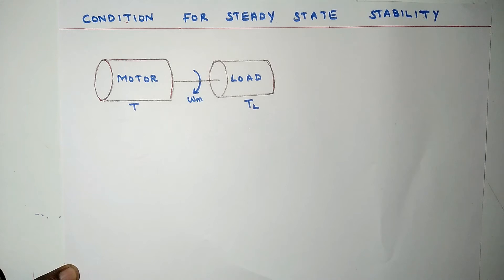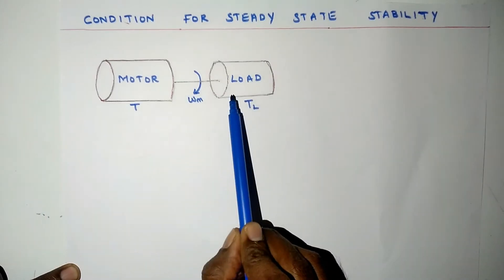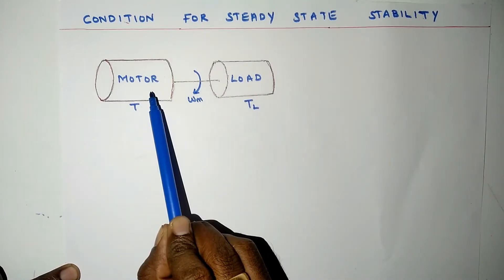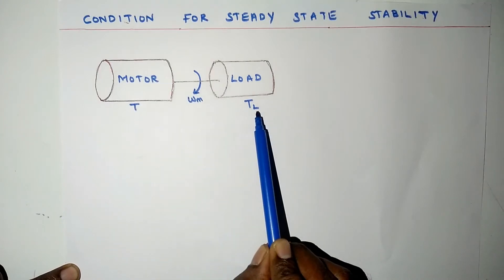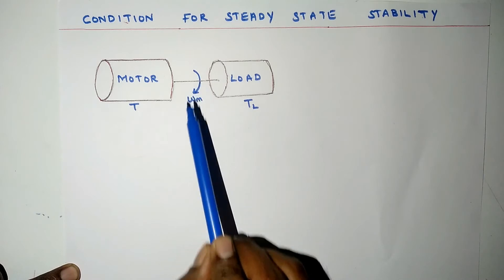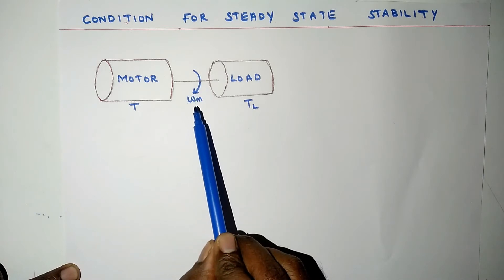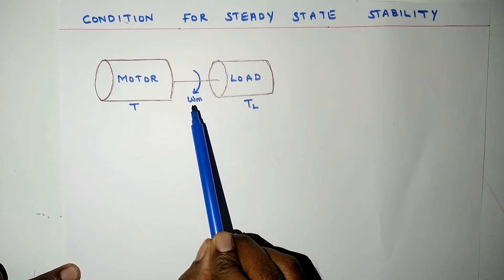Dear learners, in this lecture video, we are going to derive the condition for steady state stability for a load driven by a motor. Let us consider a load driven by a motor, where T represents the torque produced by the motor, TL represents the load torque, and omega_m represents the angular speed of the motor.